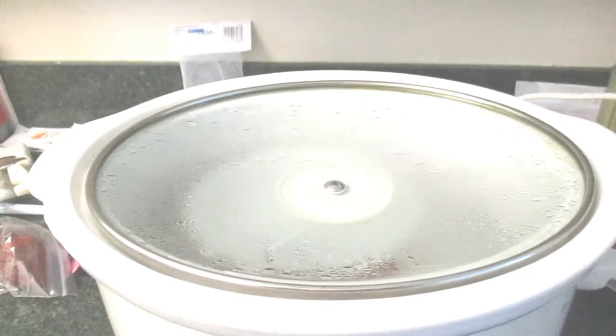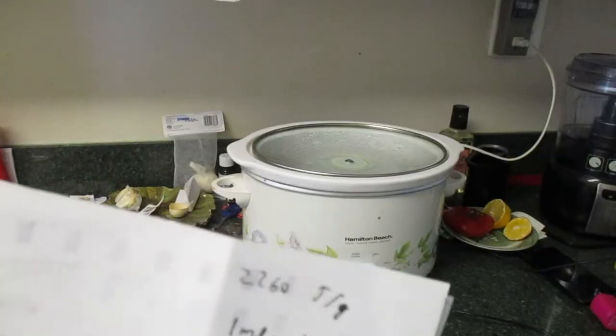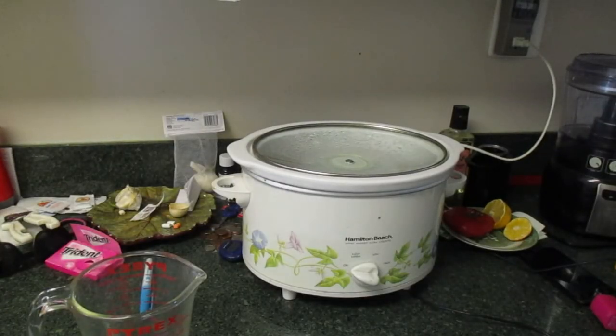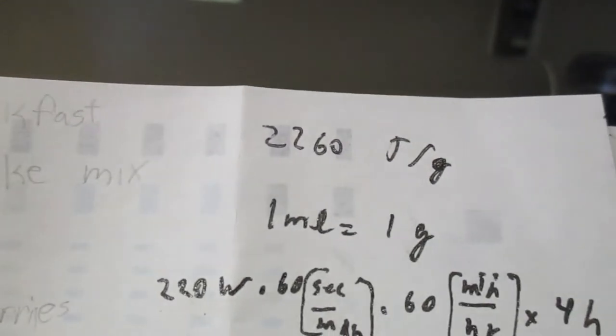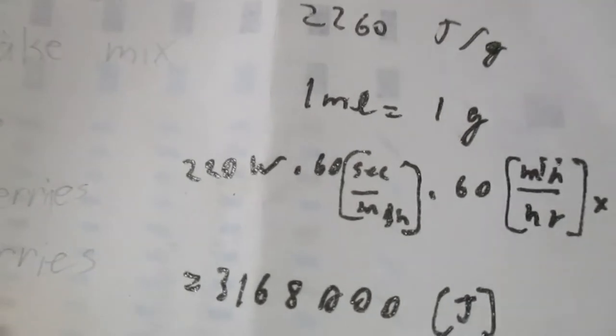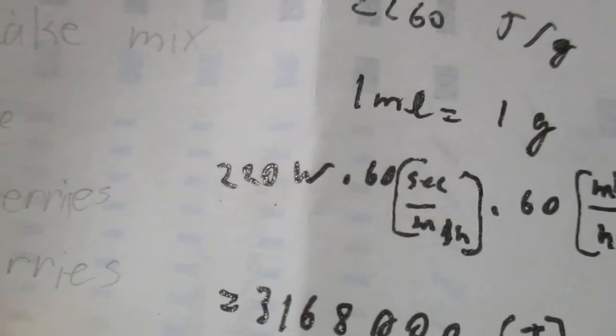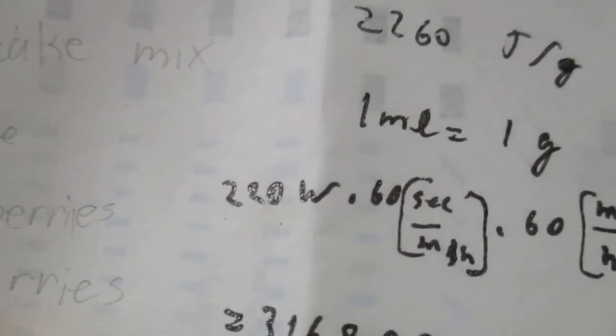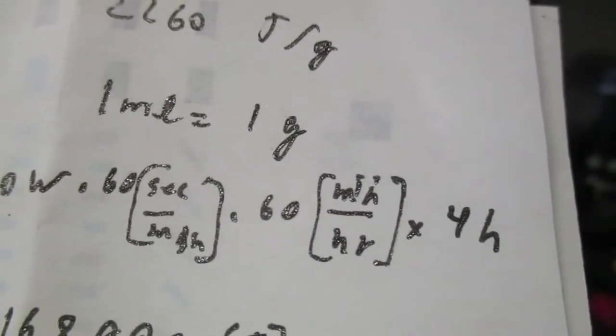And we can do some calculations to see how much it costs to make how much water. Okay, here we have our still. And we did some calculations here. Turns out it's about 2260 joules per gram to evaporate water. And water is about one milliliter per gram at STP. And we're doing about 220 watts, which is a joule per second. And we want to figure out joules as a form of energy, a unit of energy. And there's 60 seconds in a minute, 60 minutes in an hour. And we ran it for almost four hours.